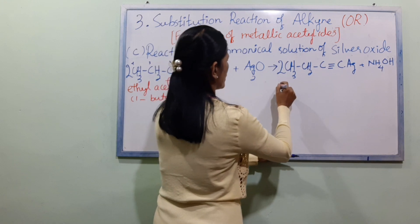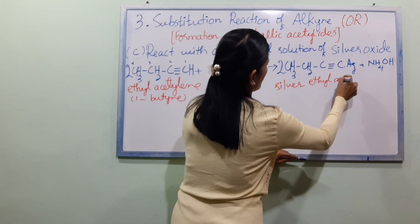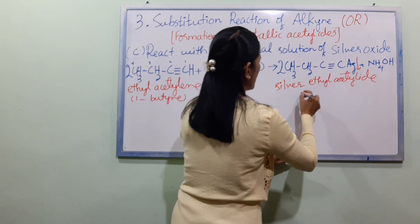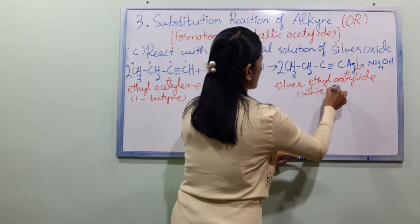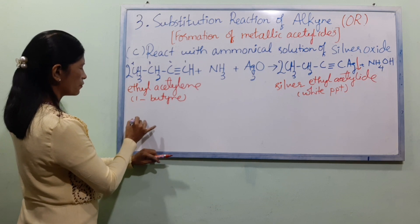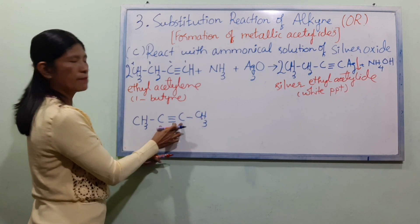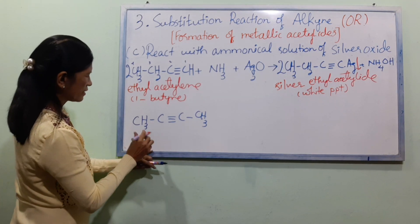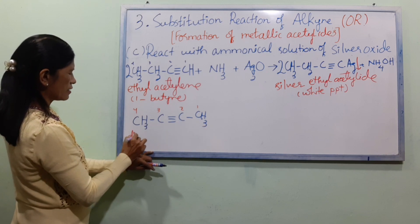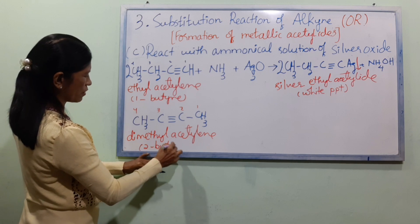Silver is sour — ethylidyne. So we are going to make this one: White PPT. Leelongo CH3-C≡C-CH3. Acetylene: A-C-E-T-Y-L-E-N-E. 2-B-U-T-Y-N-E. So we are going to make this one with NH3 and Et2O.